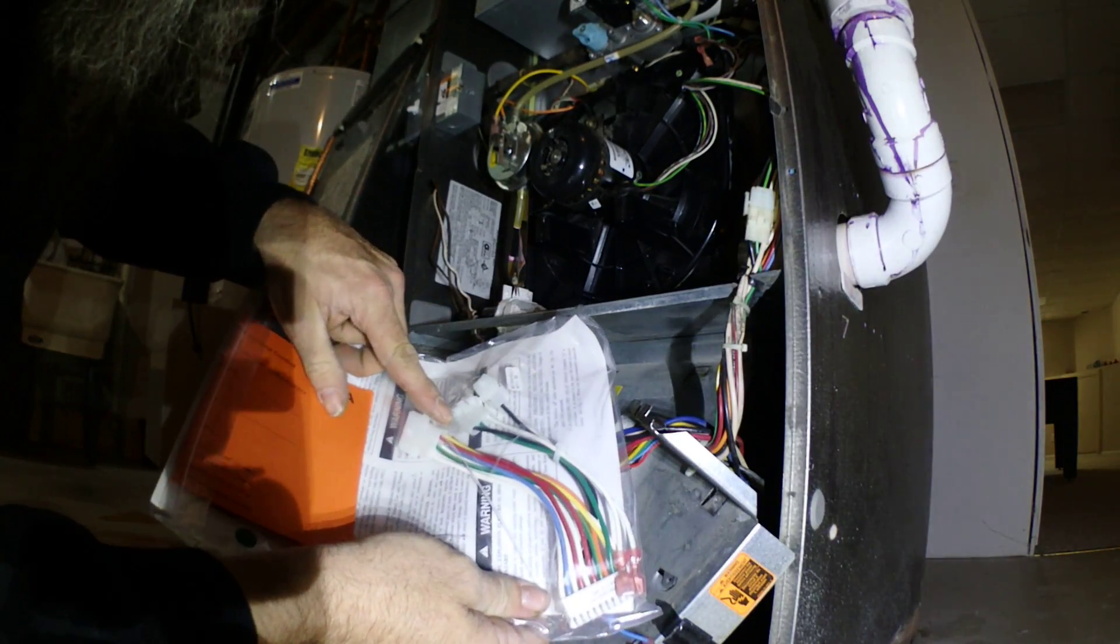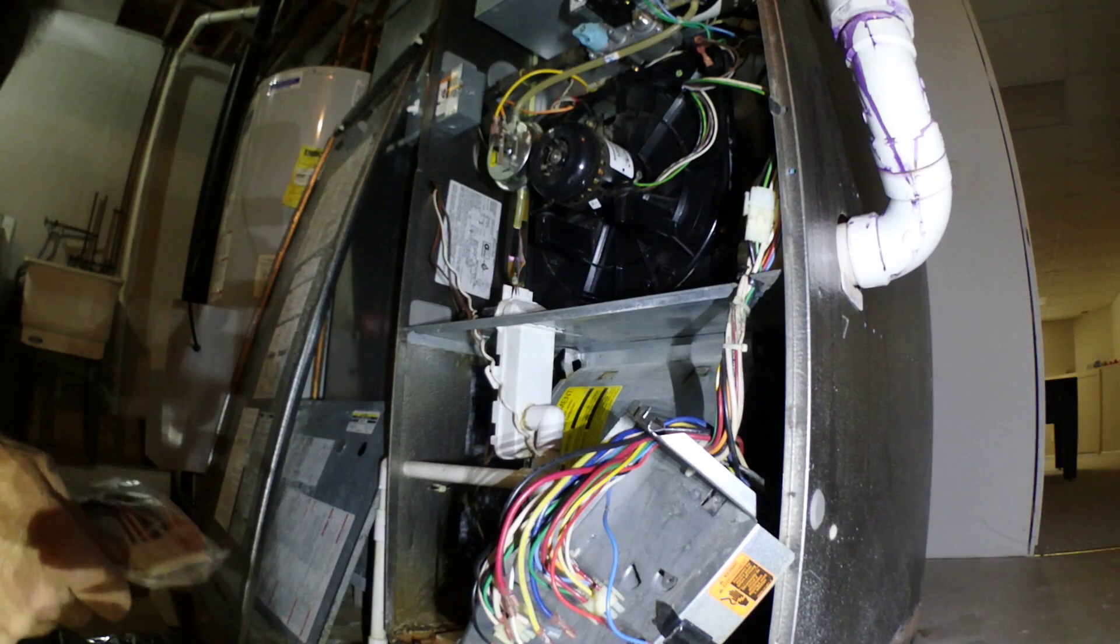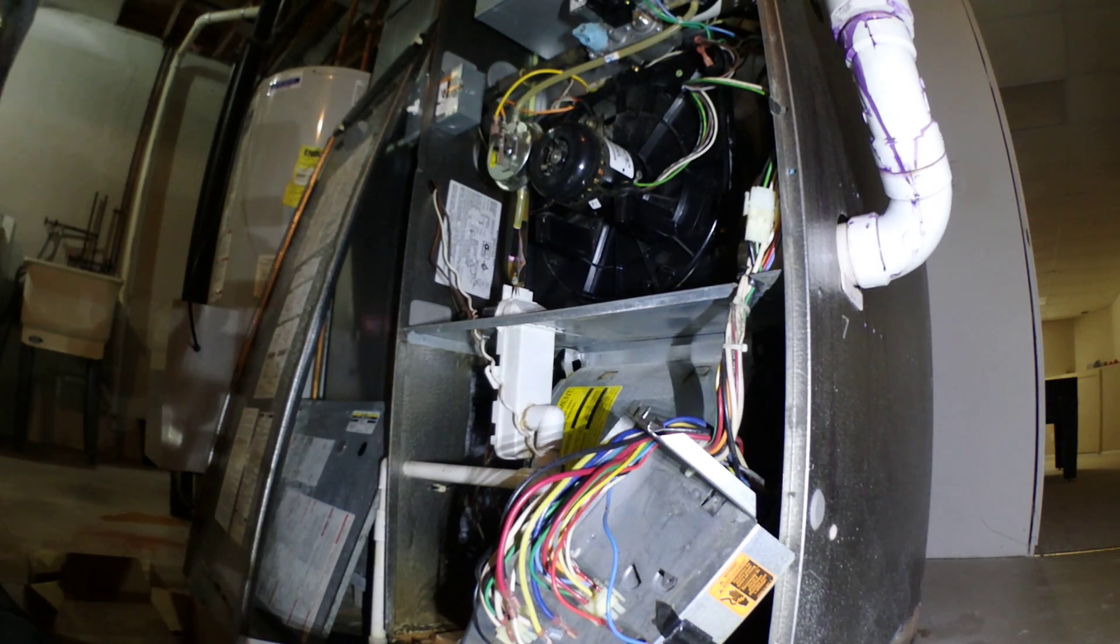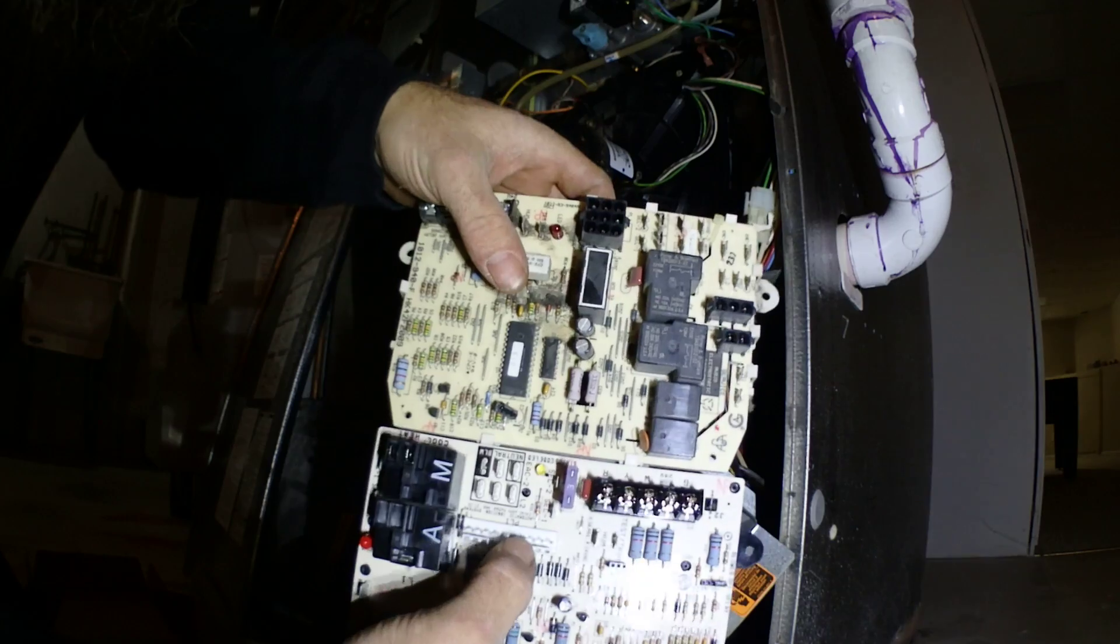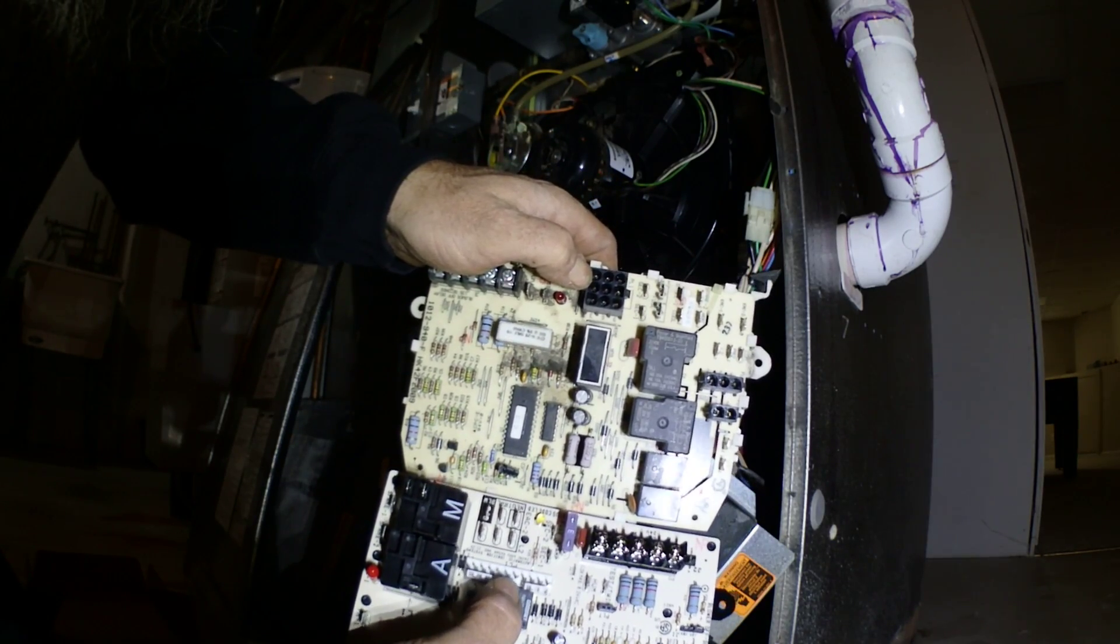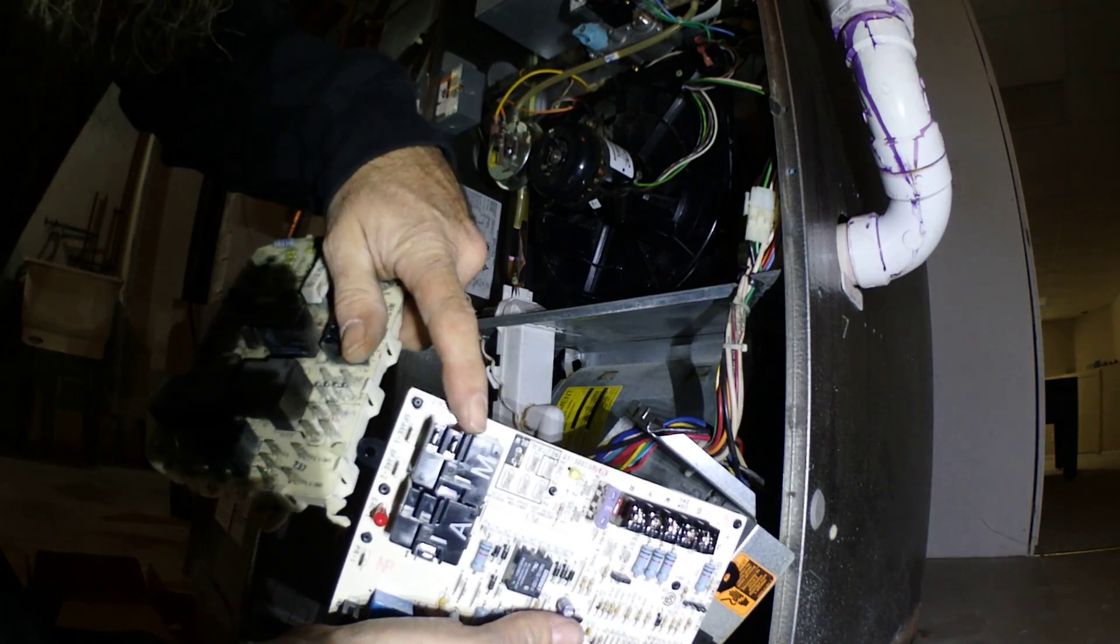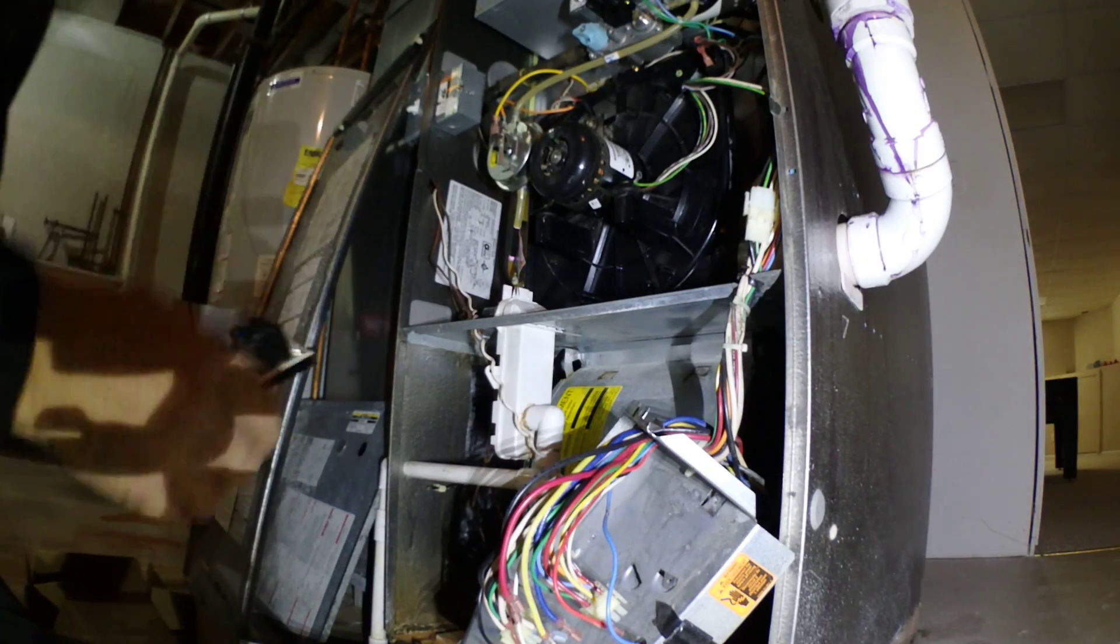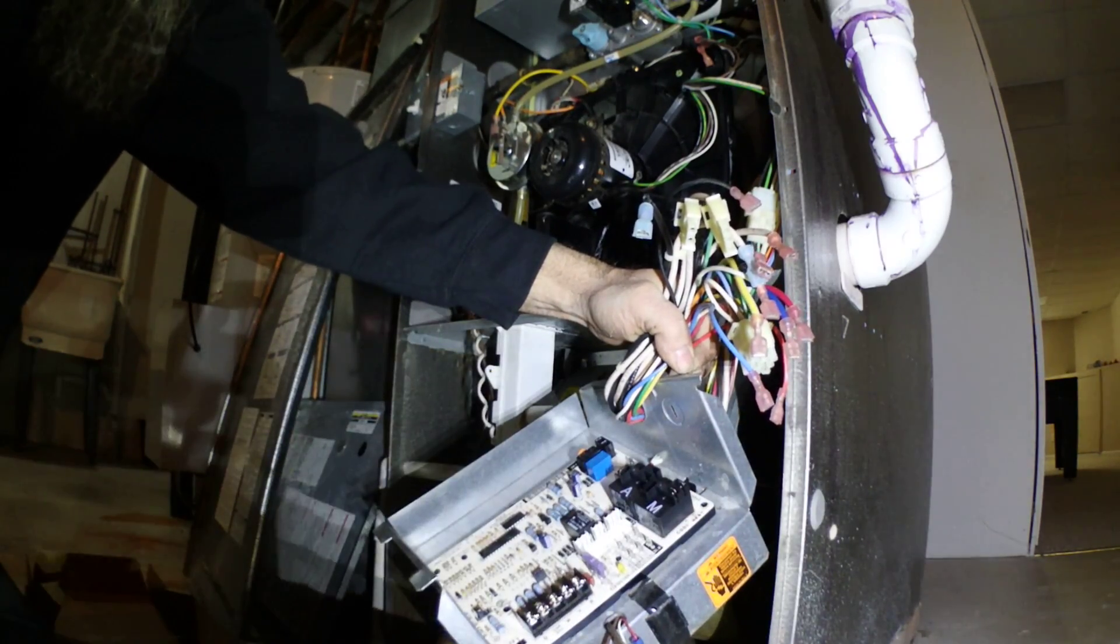Okay, this is a retrofit kit so it comes with a harness. Plugs into the board. Got two neutrals, two hots there, or a plug for a hot. Here's the new board, here's the old board. See how it has that plug? This one has that plug. So then my old one, my speed taps are here. New one, the speed taps are here.